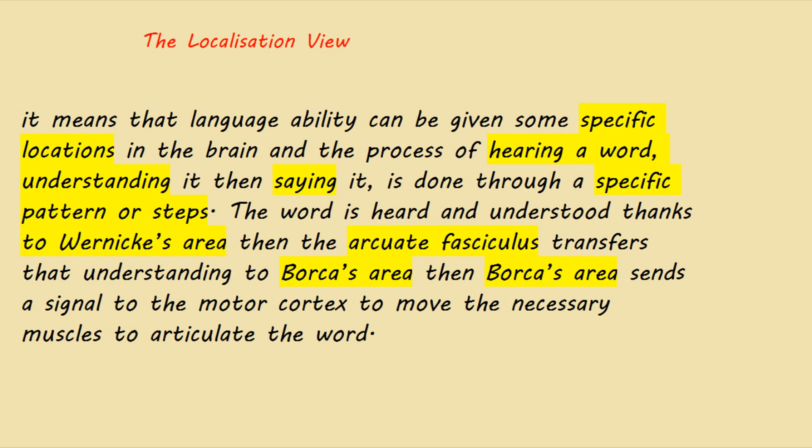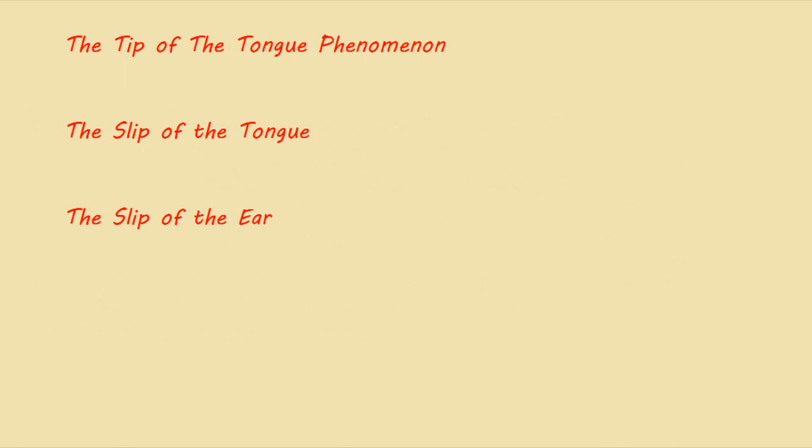In the localization view, we combine the four areas together to explain their purpose and function. Now we talk about some slight language disorders that everybody has experienced — not serious illnesses, but things each one of us as human beings has experimented at least once. We have three to discuss: the tip of the tongue phenomenon, the slip of the tongue, and the slip of the ear.